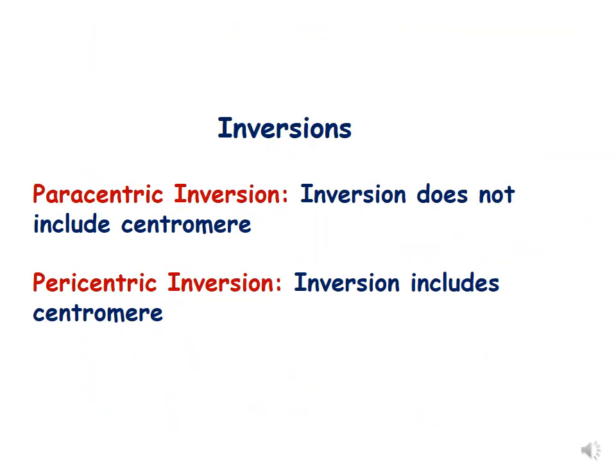Let us just summarize what we have done so far. Inversions are of two kinds: paracentric inversion and pericentric inversion. In paracentric inversion, the centromere is not included, while in pericentric inversion, the centromere is included.